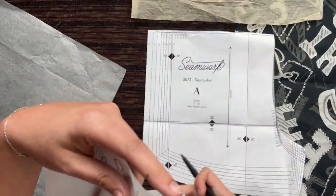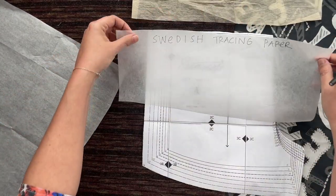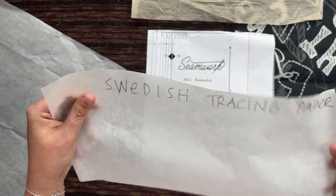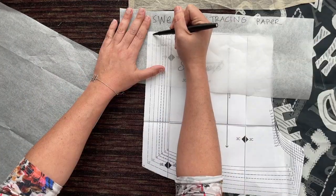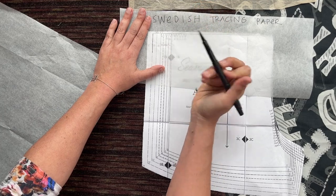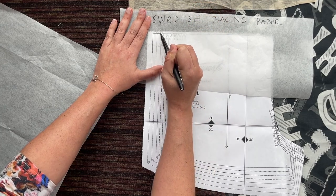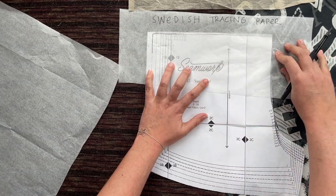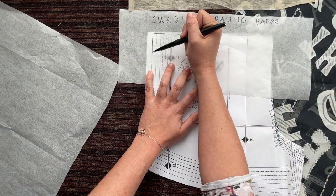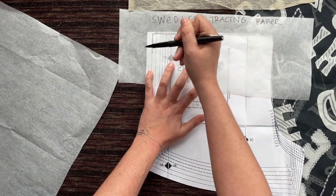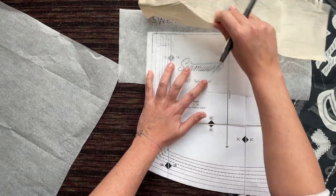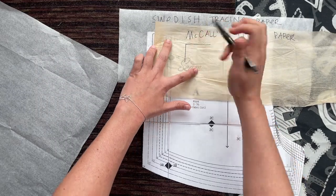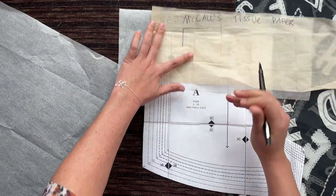Next up we have the Swedish tracing paper. This stuff is like fabric, but it's obviously not, it's paper. So when we trace this one, your pen really does catch. Because it's not smooth, because it has a little bit of a subtle texture to it, your pen really does stay on that line really evenly and cleanly, and doesn't waver like it did on the McCall's paper, where you can see it wiggling back and forth.